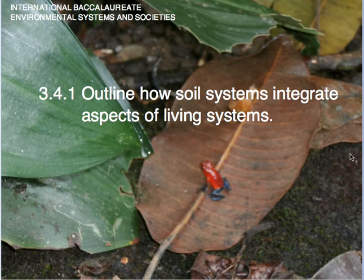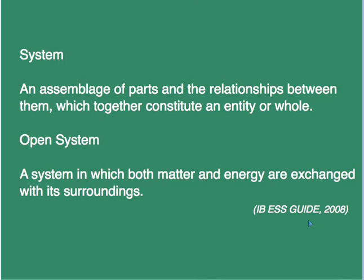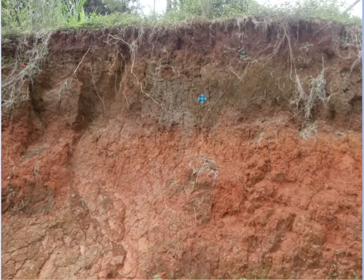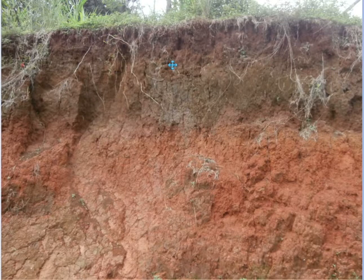Welcome. Today we consider 3.4.1: outline how soil systems integrate aspects of living systems. A system is an assemblage of parts and the relationships between them which together constitute an entity or a whole. The soil is indeed very much a system, for it is a collection of parts which include different kinds of particles, living components, and non-living components.